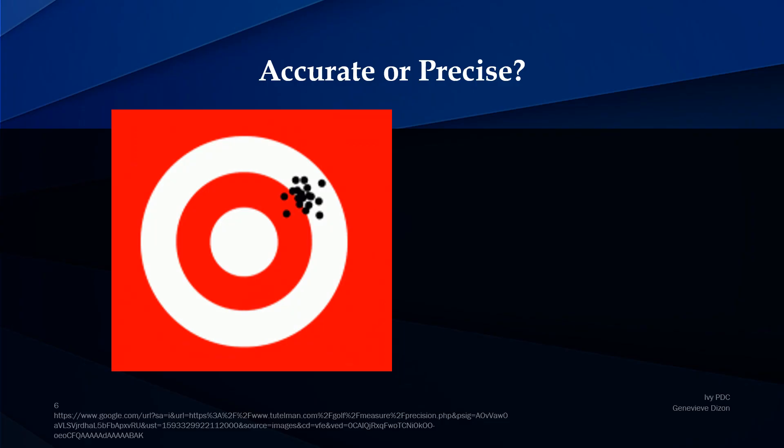Let's have an exercise to see if you can differentiate the two parameters from each other. With this chart, which one is it — accurate or precise, both, or neither? The answer is precise. Because all of the test results are together and very close to one another, they have good precision. But they are not accurate because they are not at the center — they are not reflecting the true value.